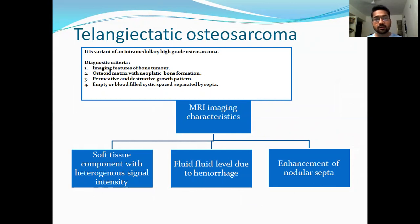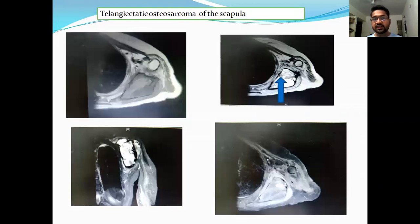First, this is about telangiectatic osteosarcoma. It is a variant of osteosarcoma. The diagnostic criteria on imaging include presence of osteoid matrix, cortex and medulla within the bone. Growth pattern is permeative and destructive. For a fluid-fluid level, there should be blood within cystic spaces separated by septa. MRI characteristics include solid components, heterogeneous signal density, fluid-fluid levels due to hemorrhage within cystic spaces, and nodular septal enhancement. Here is a case of telangiectatic osteosarcoma of the scapula showing fluid-fluid levels with high signal intensity on T2-weighted images and characteristic linear levels.